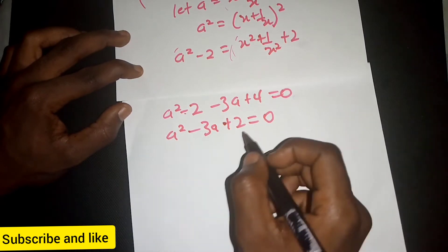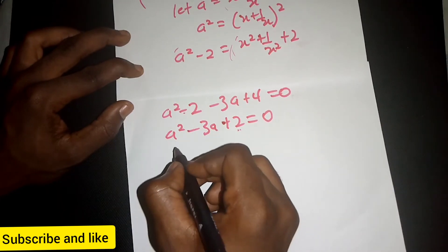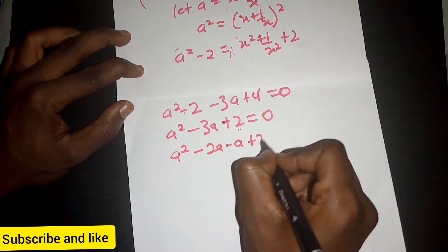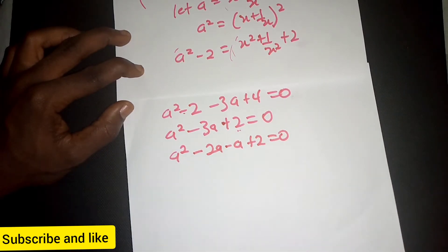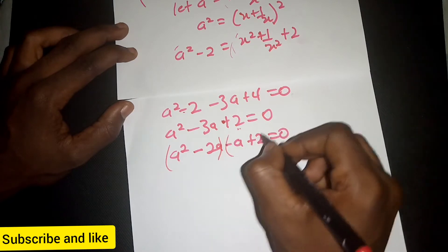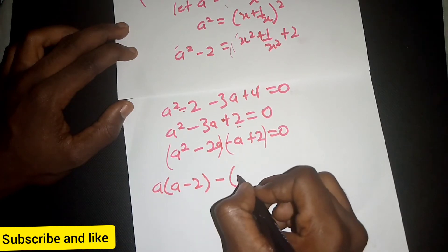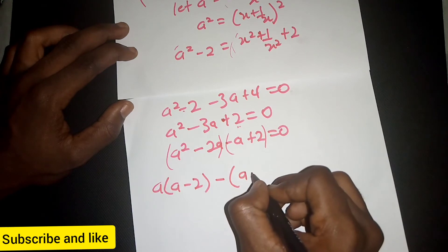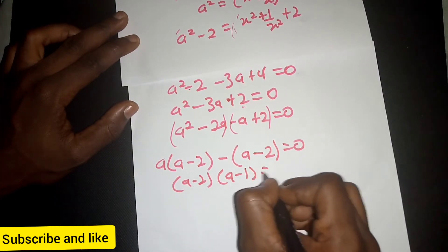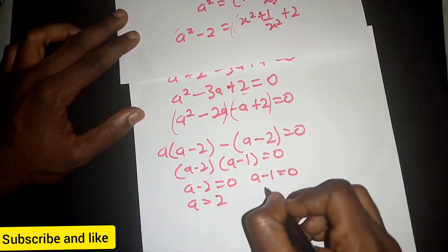We now have a quadratic equation. We need two values that multiply to give positive 2 and add to give negative 3. Factoring: a squared minus 2a minus a plus 2 equals 0. Grouping: a times (a minus 2) minus 1 times (a minus 2) equals 0. So (a minus 2)(a minus 1) equals 0, giving a equals 2 or a equals 1.